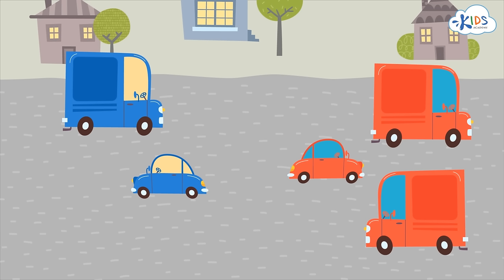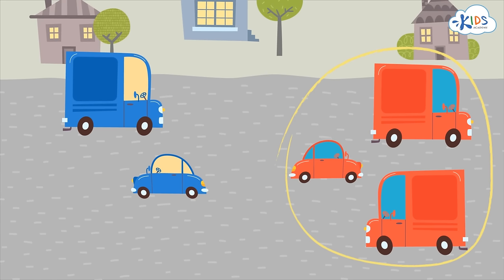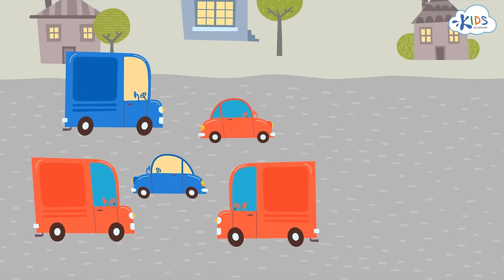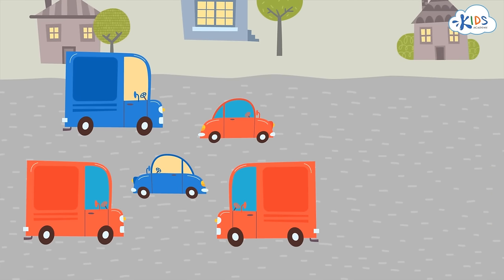Do you see any more red cars? Neither do I. There were three red cars — two of them were big and one of them was small, but they were all red. Let's look at the same group of cars that we started with again. Can we sort these cars another way? Yes! We can sort the cars by size. There are big cars and small cars.